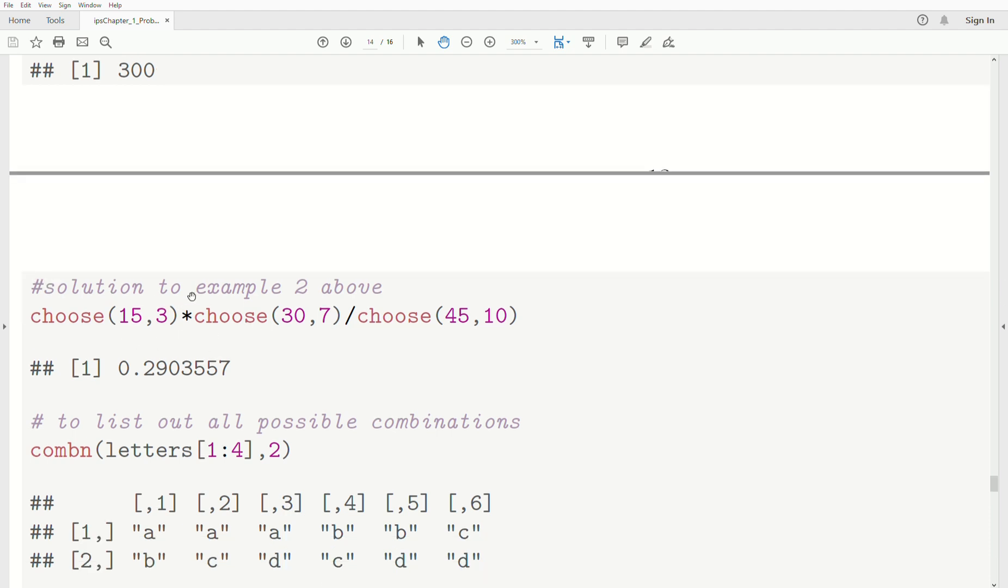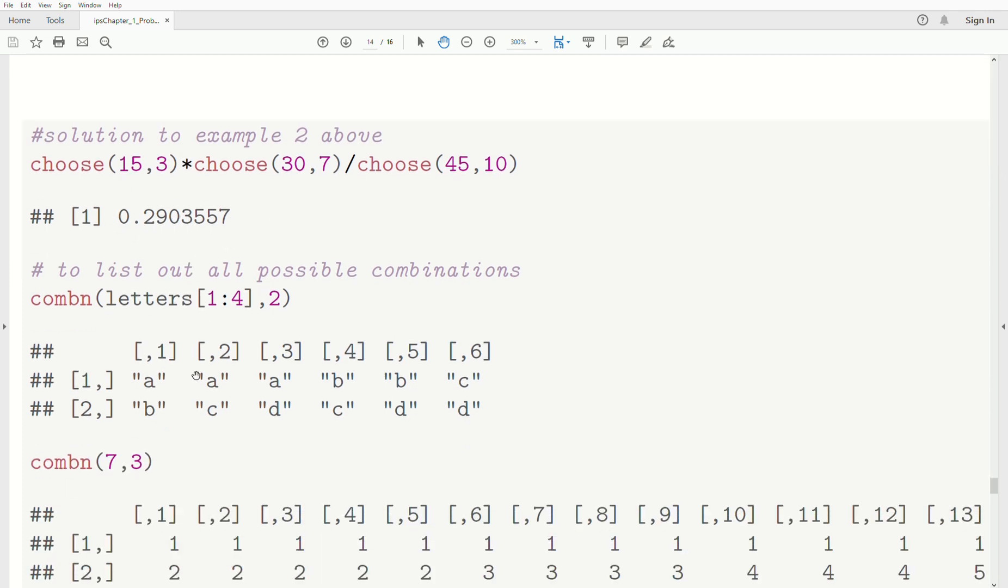And the solution for example 2 is 15 choose 3 times 30 choose 7 divided by 45 choose 10. And it's 29%.